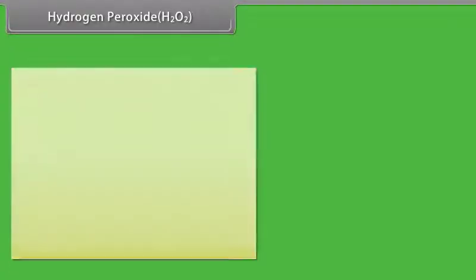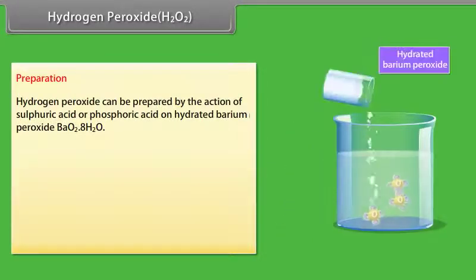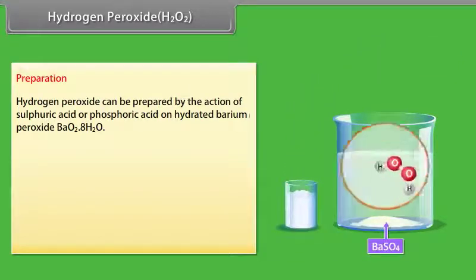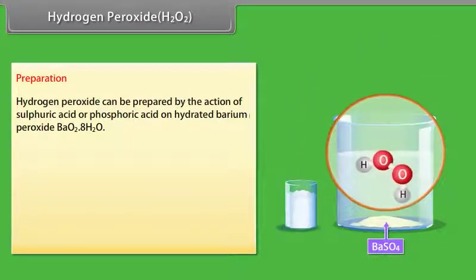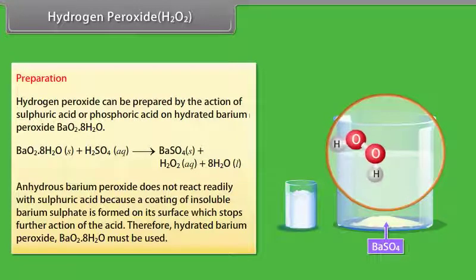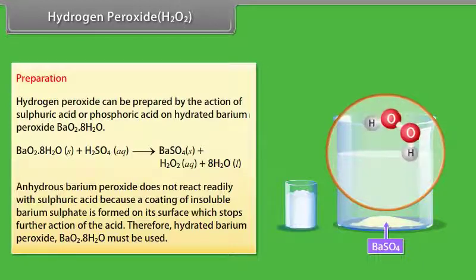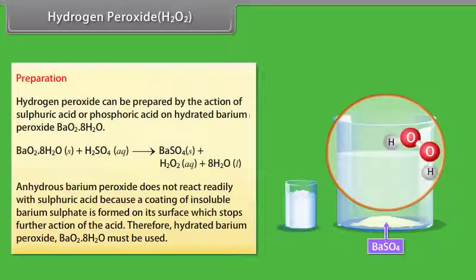Hydrogen peroxide H2O2 - Preparation: Hydrogen peroxide can be prepared by the action of sulfuric acid or phosphoric acid on hydrated barium peroxide. Anhydrous barium peroxide does not react readily with sulfuric acid because a coating of insoluble barium sulfate is formed on its surface which stops further action of the acid. Therefore, hydrated barium peroxide, BaO2·8H2O, must be used.